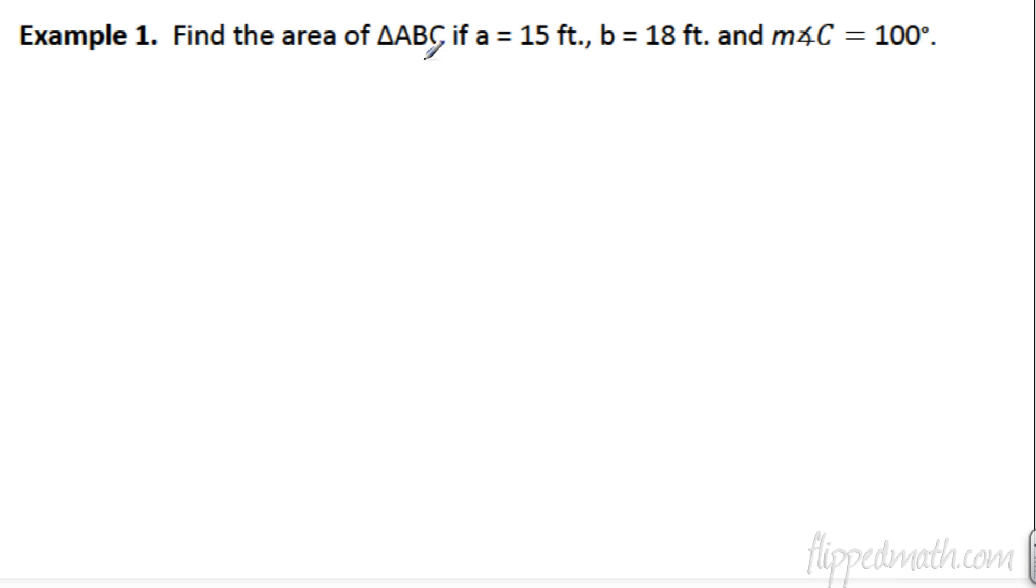First example. Find the area of triangle ABC if A is 15, B is 18, and the measure of angle C is 100. So, I'm going to draw that angle C first. It's a little bit obtuse, just like Mr. Brust. So, this is going to be C. Side length A is 15. Side length B is 18.